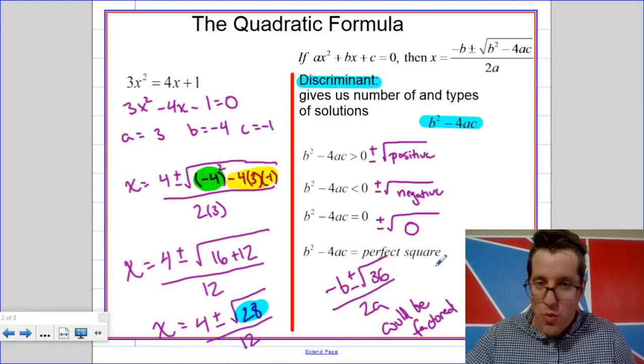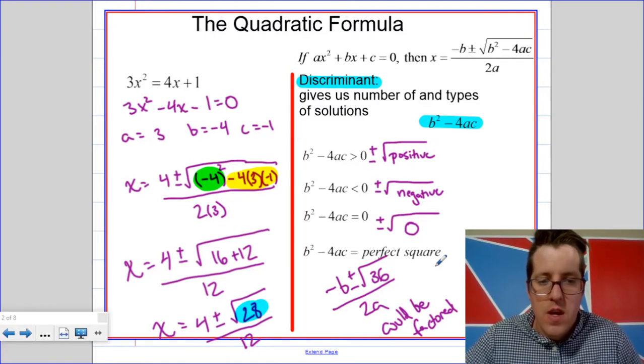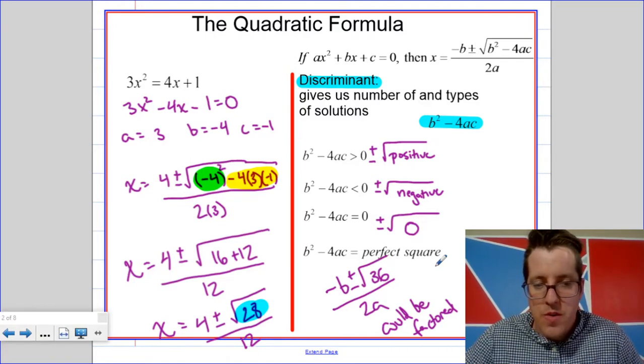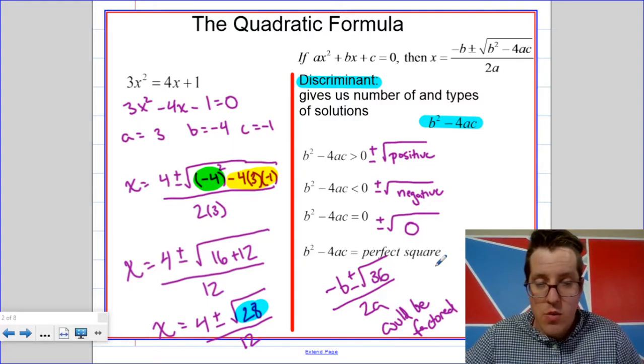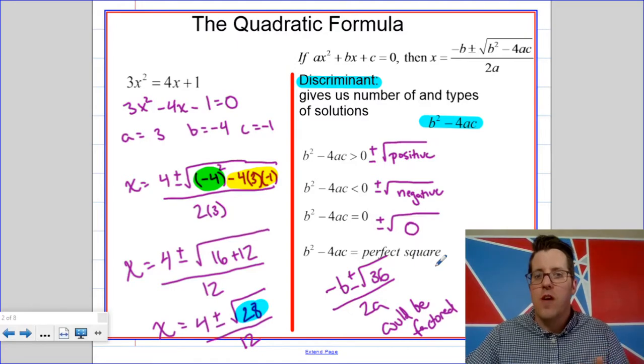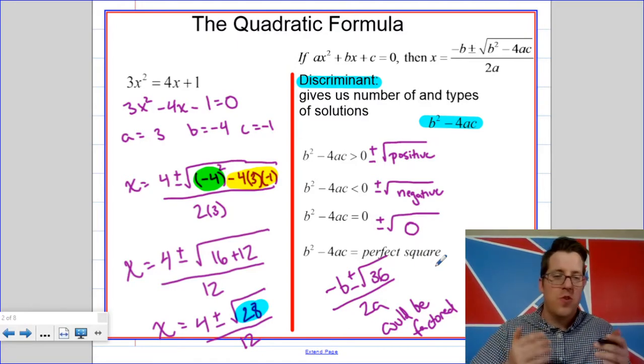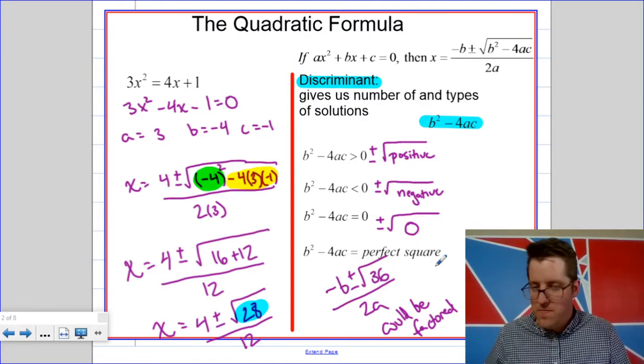In this case, you'd get two rational numbers as your solution. If you can get rational numbers, it means you could factor, because the zeros are themselves the quotient of two integers.